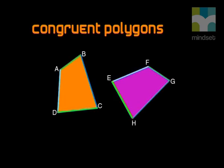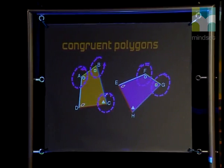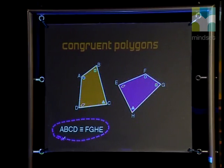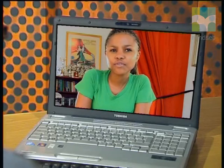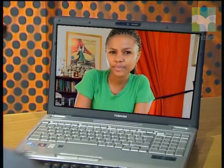In our example, angle A corresponds with angle F, angle B corresponds to angle G, angle C corresponds to angle H, and angle D corresponds to angle E. So our congruency statement says that polygon ABCD is congruent to FGHE. So does this mean if we see a congruency statement, we can see at a glance which sides and angles are equal in shapes? Quite right. That's good thinking, Kanya.